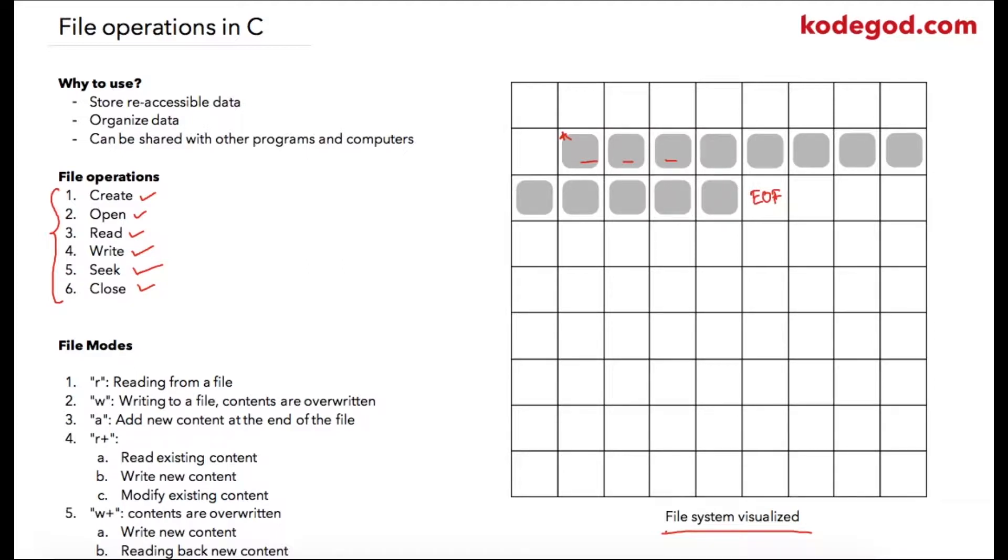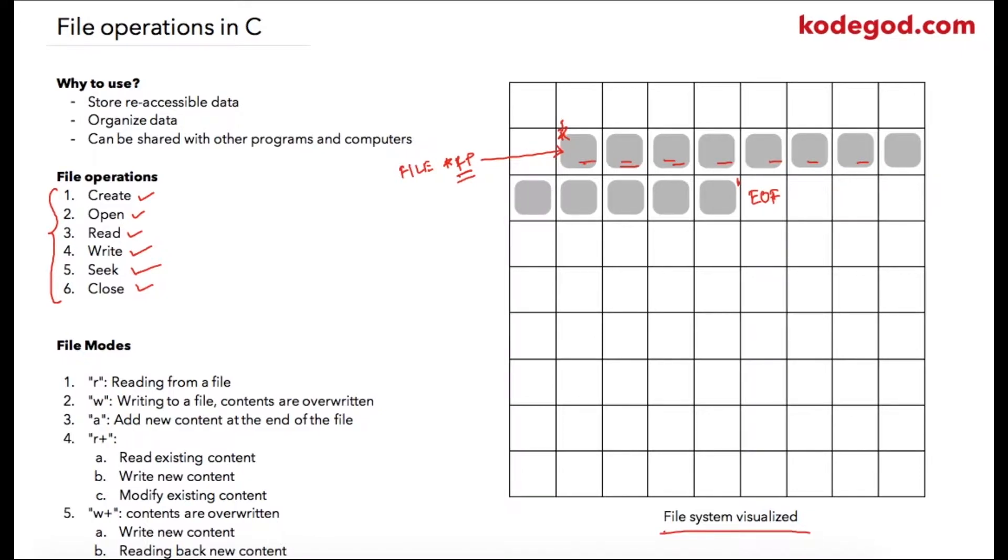To read a file we create a file pointer which points to this location. Suppose I'm using a file pointer as FILE star fp, then suppose if it is pointing this location, then using this pointer we can traverse across all other memory location of the file. We can read contents, we can write content using this file pointer and some readily available functions in C language.